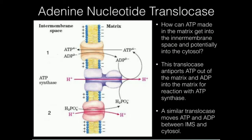The adenine nucleotide translocase moves ADP into the matrix and also moves ATP out of the matrix into the intermembrane space. Since mitochondria has two membranes, if ATP moves into the intermembrane space, it's still not in the cytosol. It turns out the outer membrane has similar transporters that facilitate movement of ATP out into the cytosol and ADP back into the intermembrane space — an identical protein doing the same thing on each membrane.